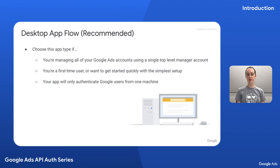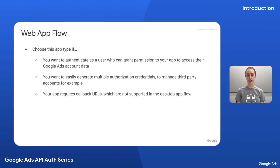The desktop app flow is the recommended approach because it's the easiest to get started with. You should use this if you're managing all of your Google Ads accounts using a single top-level manager account, or are a first-time user wanting to get started quickly, or if your app will only authenticate users from one machine. On the other hand, use the web app flow if you want to authenticate as a user who can grant permission to your app to access their Google Ads account data, easily generate multiple authorization credentials, or if your app requires callback URLs — since callback URLs are not supported with the desktop app flow.